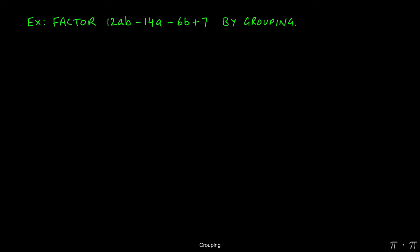In this question, we're asked to factor 12ab minus 14a minus 6b plus 7 by grouping. We start, as we normally do, by grouping the first two terms together and the last two terms together.